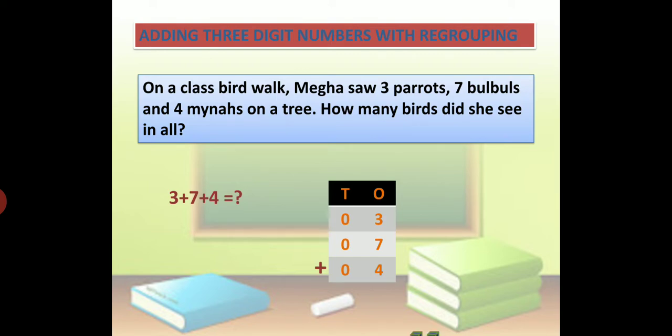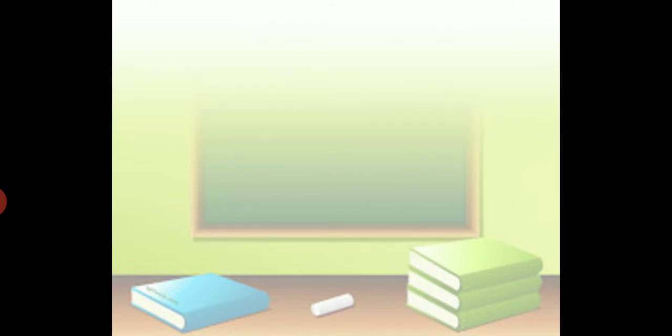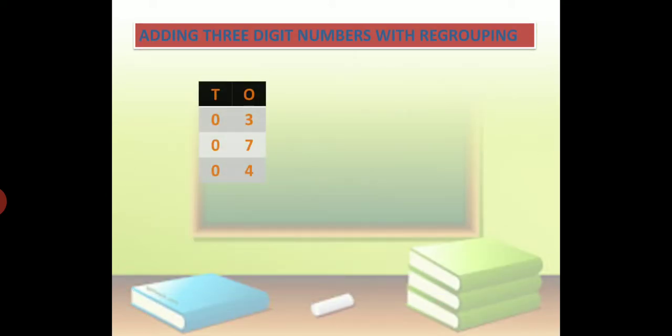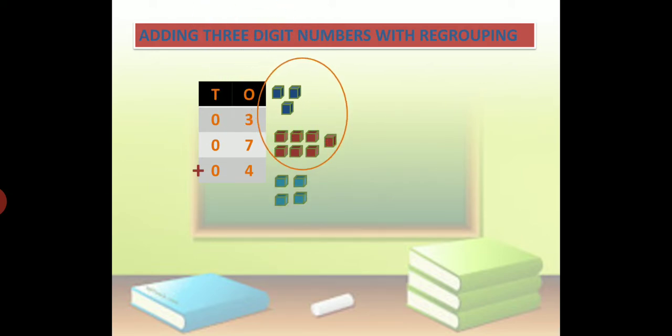So 3 plus 7 equals 10. You can see 3 is a single digit, so 3 cubes are there. Then we put 7, then 4. Now we have to make a group. 3 plus 7 equals 10, which is 10 ones.